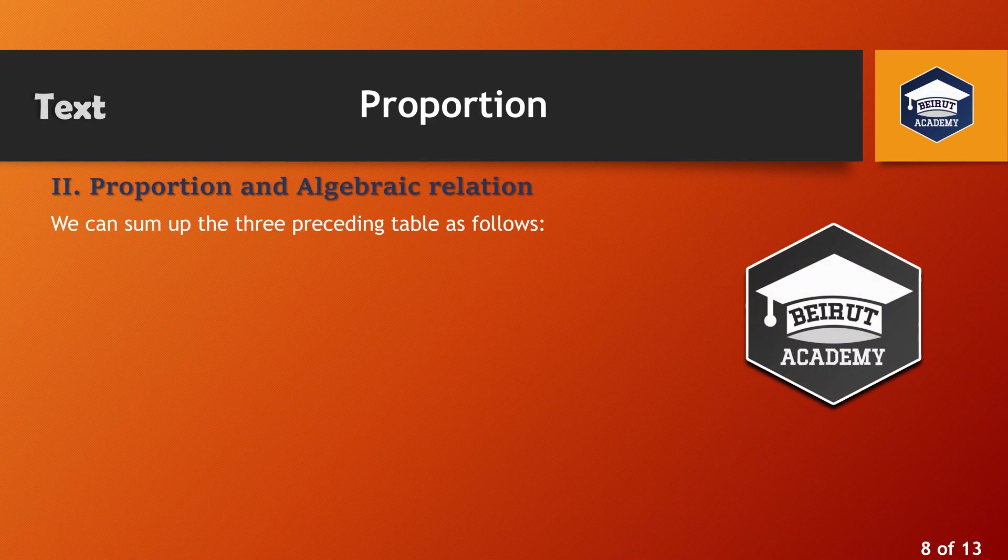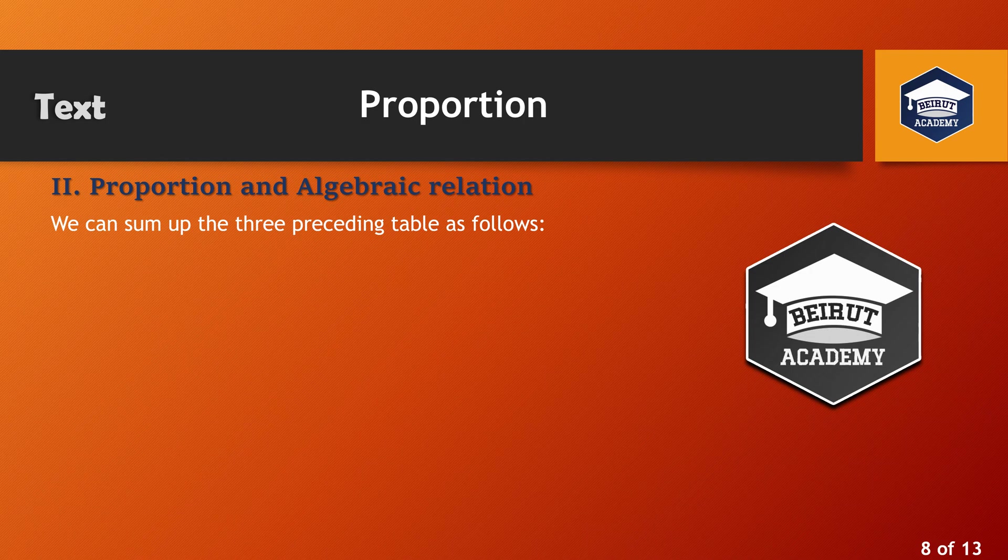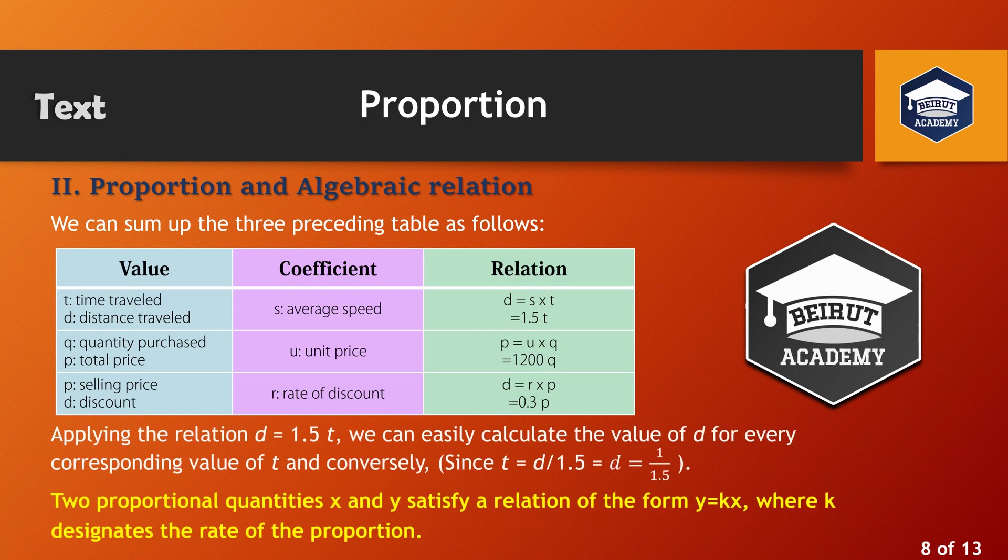Proportion and algebraic relation. We can sum up the three preceding tables as follows. Applying the relation D equals 1.5 T, we can easily calculate the value of D for every corresponding value of T, and conversely, since T equals D divided by 1.5 equals D equals 1 over 1.5. Two proportional quantities X and Y satisfy a relation of the form Y equals KX, where K designates the rate of the proportion.